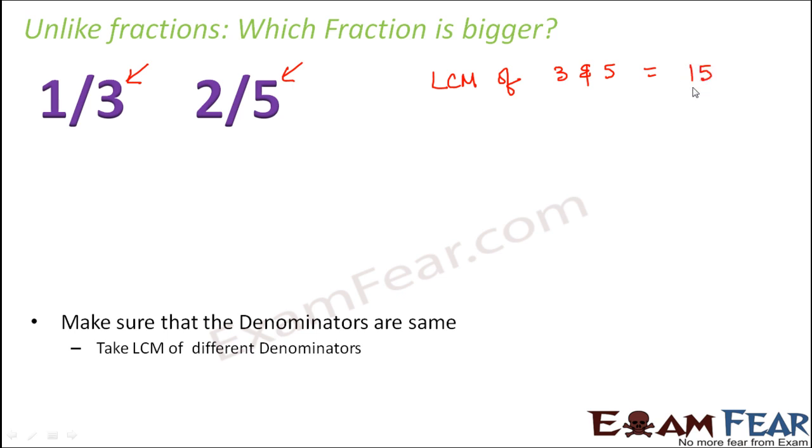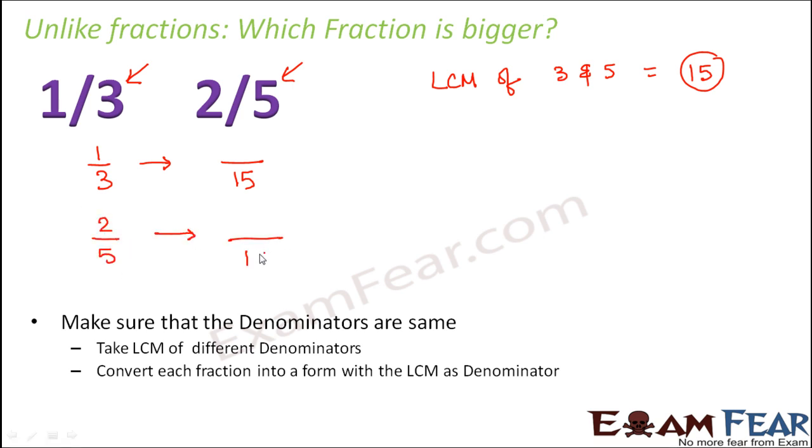Now how to find LCM we have already discussed in one of the previous lessons. If you have forgotten that, so please go back to that lesson and revise. So once we have found out the LCM of these two, now what we do, now our aim is to convert each of these fraction into a form where this LCM is the denominator. So basically now our aim is to convert this 1 by 3 into a form where the denominator is 15.